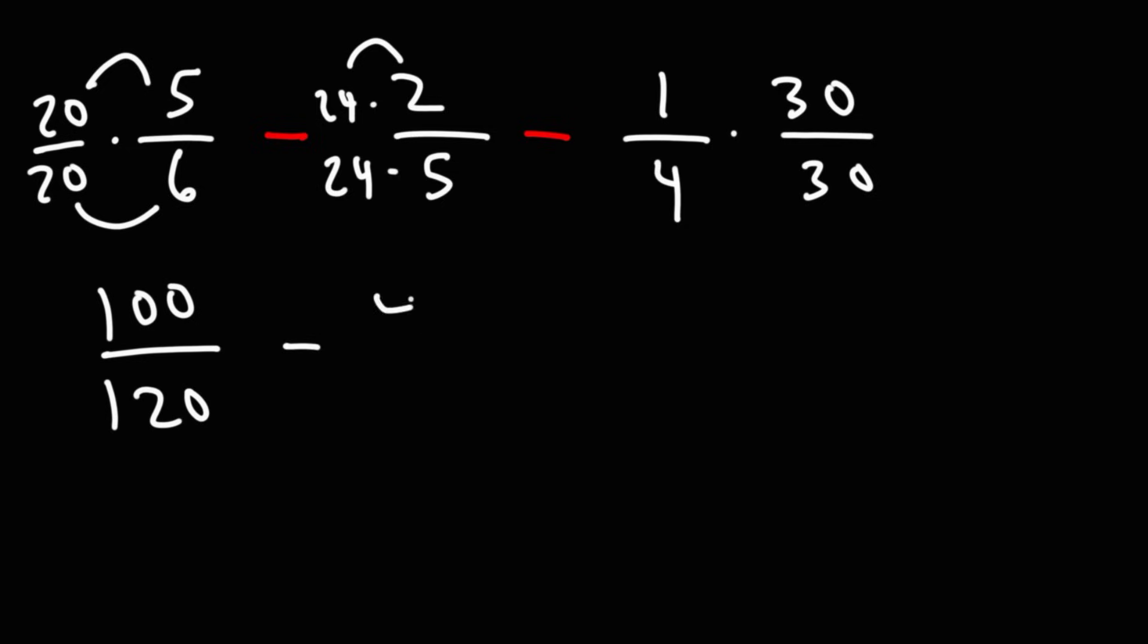24 times 2 is 48. 24 times 5, we know it's going to be 120. If you want to use long multiplication, here's what you can do. So 4 times 5 is 20. We're going to write the 0, carry the 2. 5 times 2 is 10. Plus 2, we get 120.